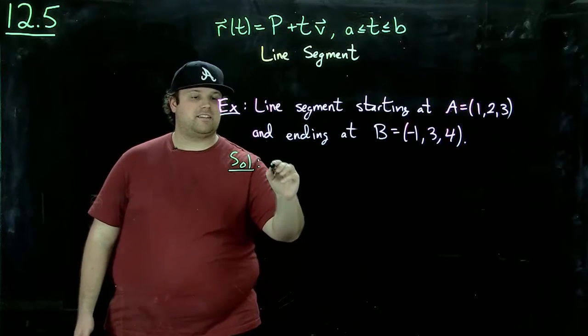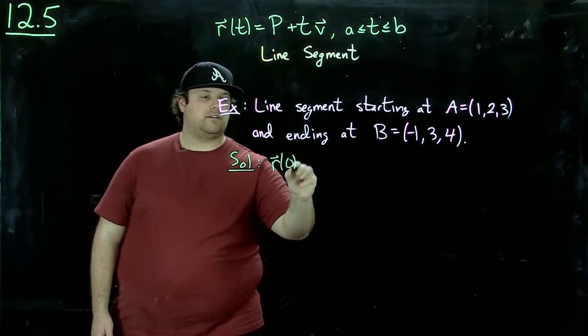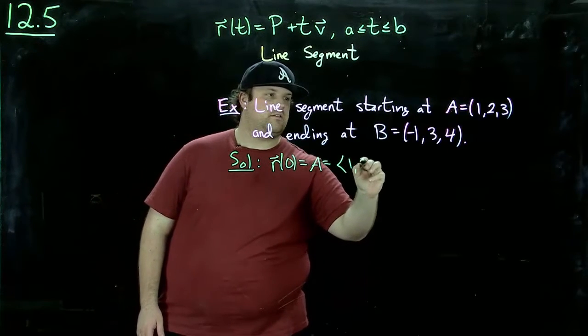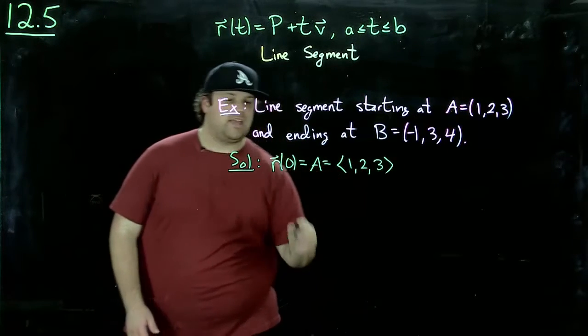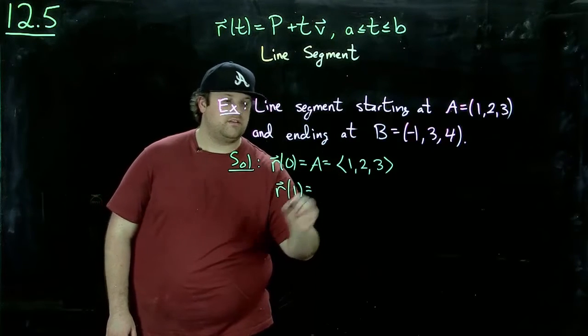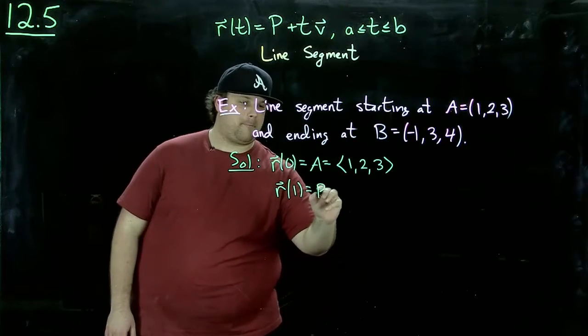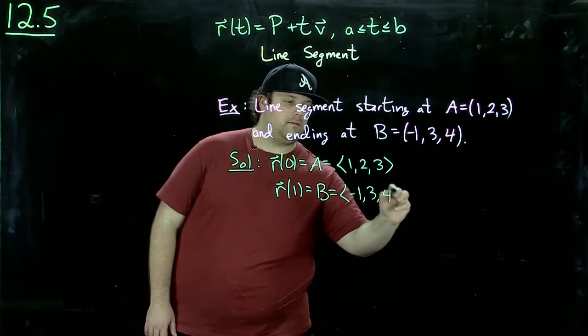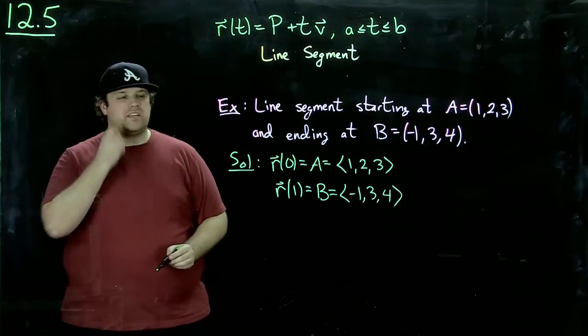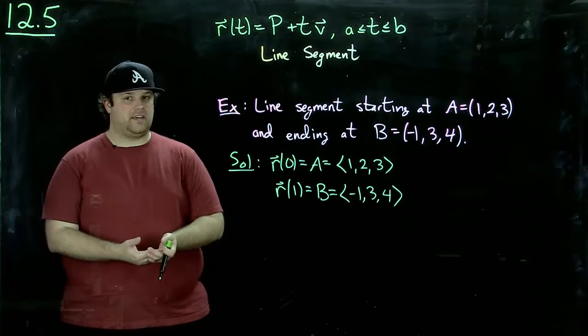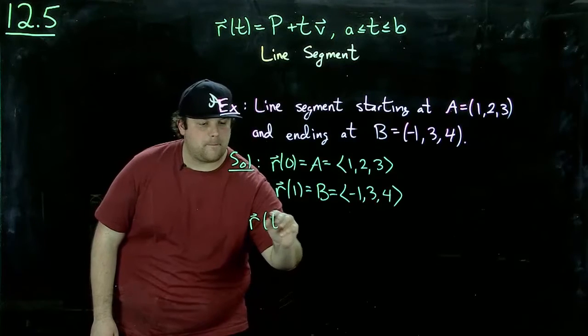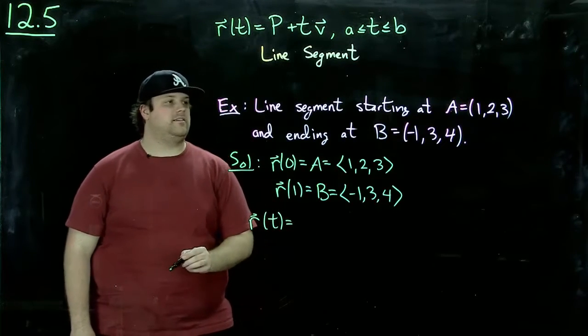So what we're basically saying is we want r of zero to be a, this one, two, three. And we want r of one to be b, which is minus one, three, four. Well, the easiest way to combine these together into one whole thing is to say, well,